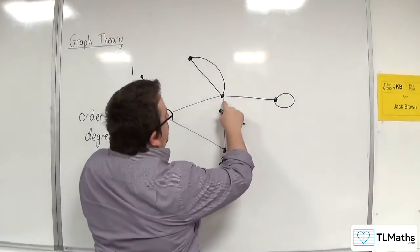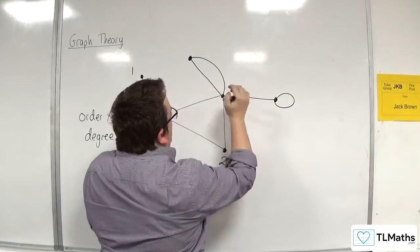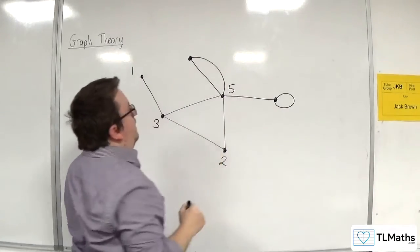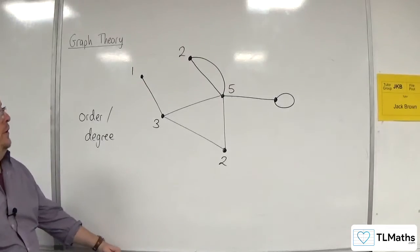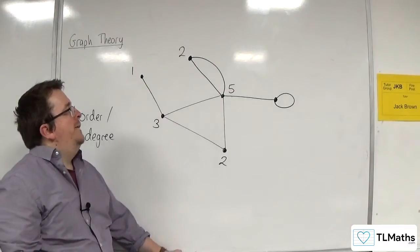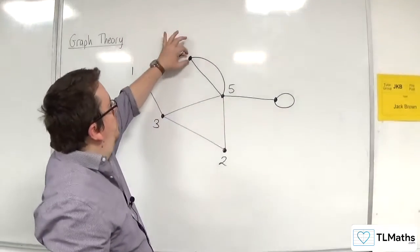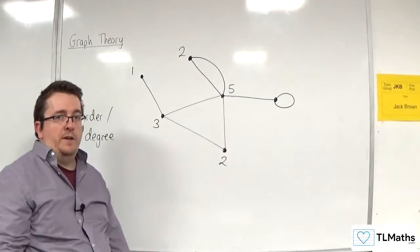This one has 1, 2, 3, 4, 5, so this has order 5. And this one has order 2. So even though there are multiple edges here, there are two roots out from that vertex.